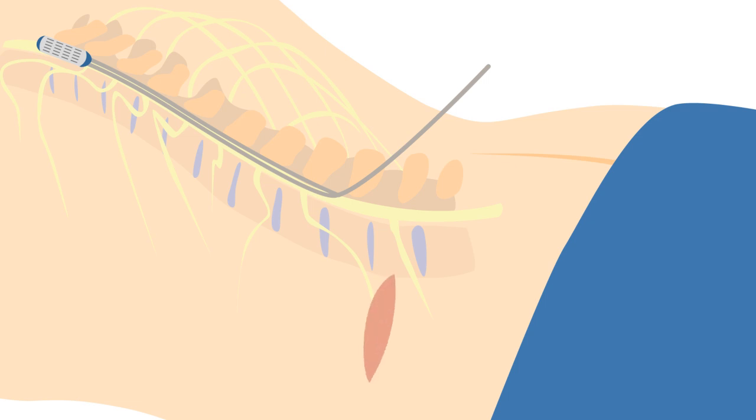Once those are in place, a second incision is made to subcutaneously place the implantable pulse generator, which includes the battery. Usually, this is right above the buttocks or in the abdomen. The leads are connected to the generator, and then the wounds are closed.